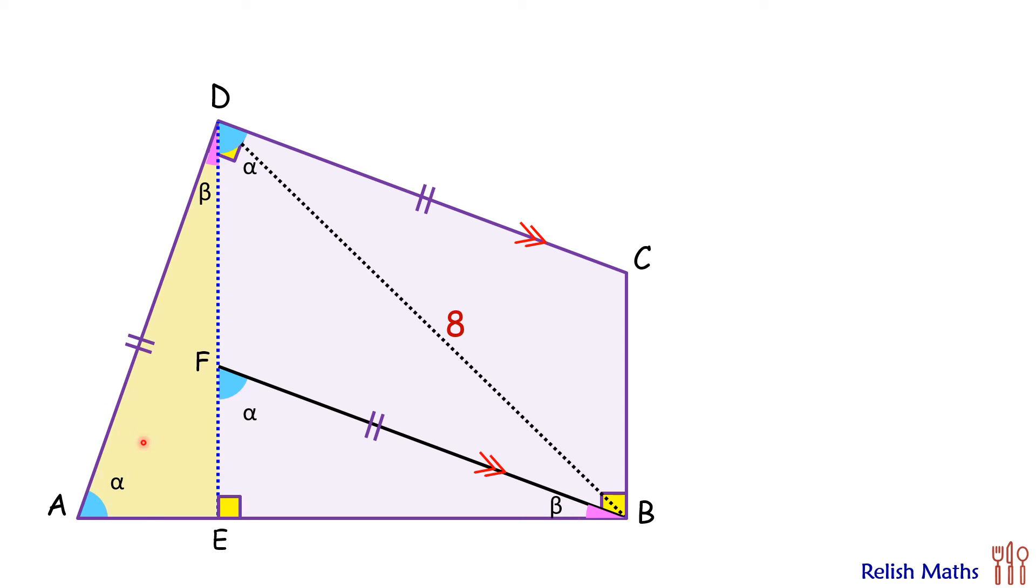Now in these two triangles, this yellow triangle and blue triangle, if we'll see this alpha, this side, and this beta degrees, so we are looking at angle, side, and angle. So here also we have got alpha, side, and beta degrees.